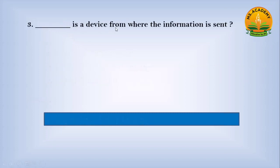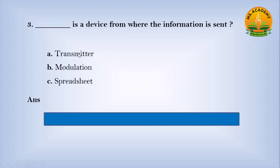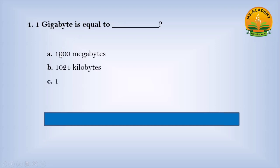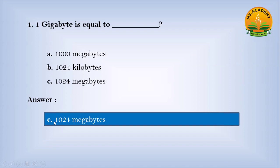Dash is a device from where the information is sent. Option A Transmitter, option B Modulation, option C Spreadsheet. Answer: A. Number Transmitter. One gigabyte is equal to dash. Option A 1000 megabytes, option B 1024 megabytes, option C 1024 megabytes. Answer: C. Number 1024 megabytes.